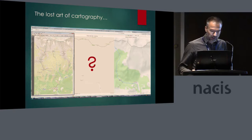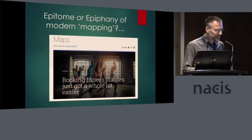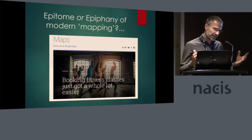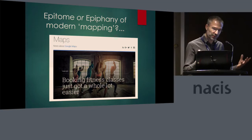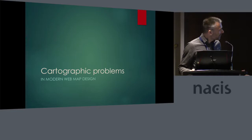That raised another question in that whole setting: is it the epitome or the epiphany of modern mapping that you book fitness classes through your map? For me it was perhaps the latter — a kind of realization that the really rich historic topographic map context I grew up with is no longer what's considered the hot thing to be working on. So what do I see as the cartographic problems in modern web mapping?